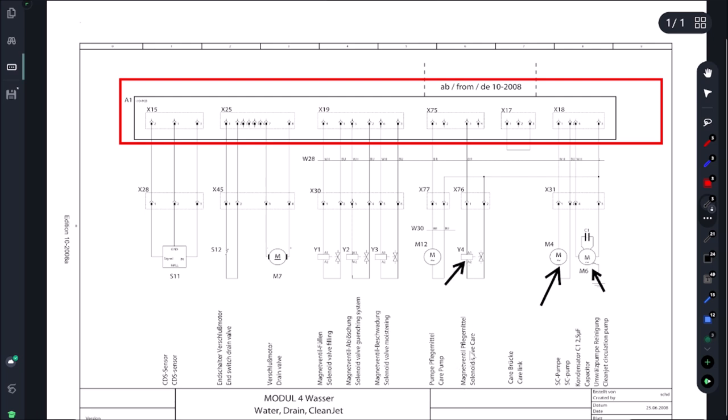M12 care pump, and then our solenoids Y3, Y2, Y1, which is our quenching and our filling, then our one for moistening M7 drain valve, our CDS sensor, our drain valve switch. There's all kinds of stuff going on here.